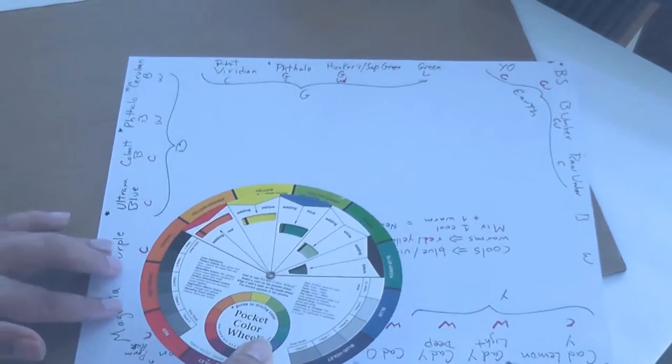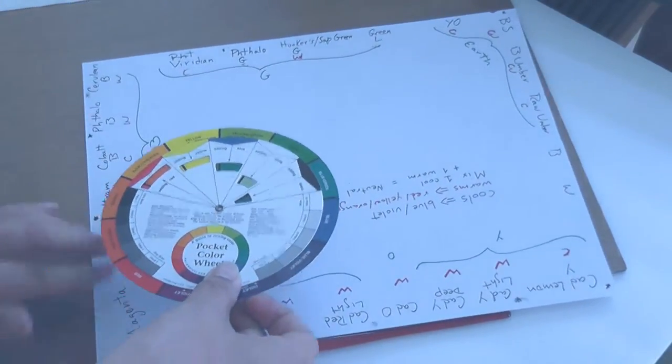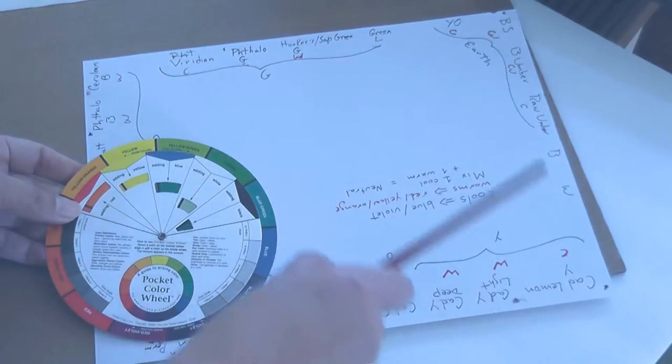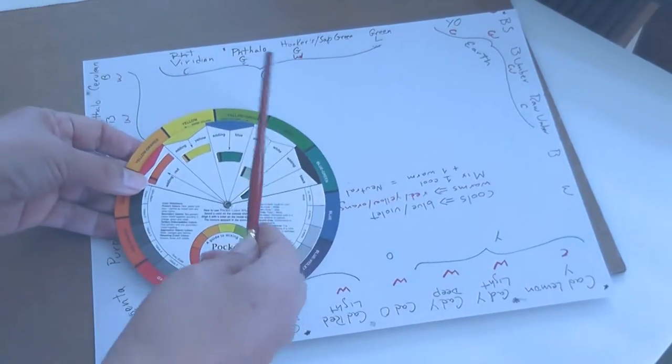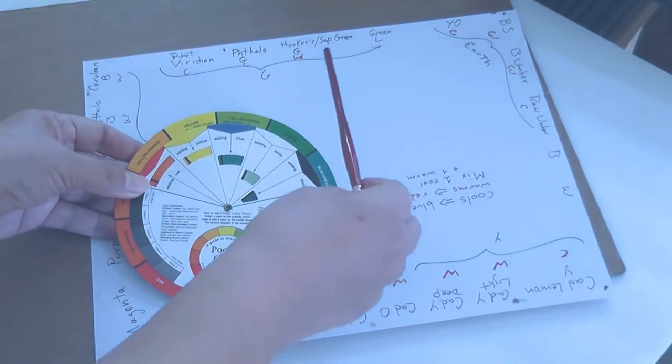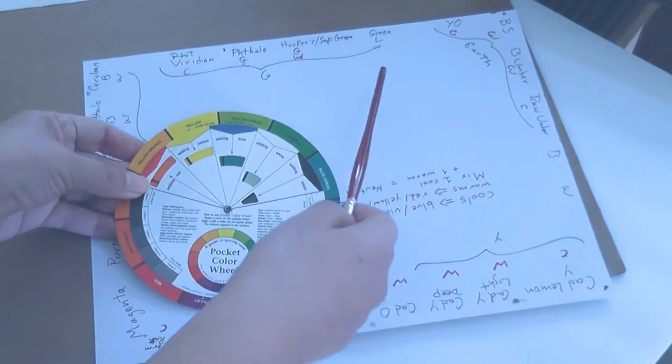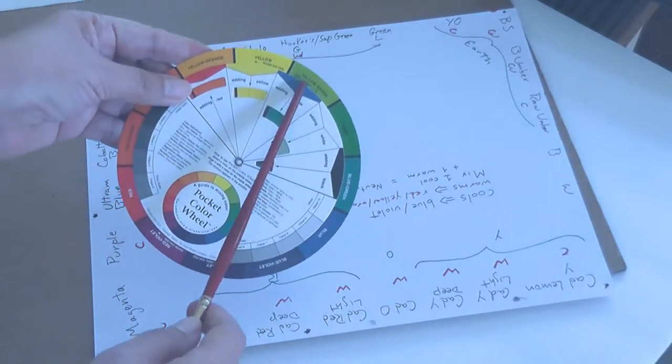I continue with the greens: viridian, phthalo green, sap green, and light green. I finish with the light green.